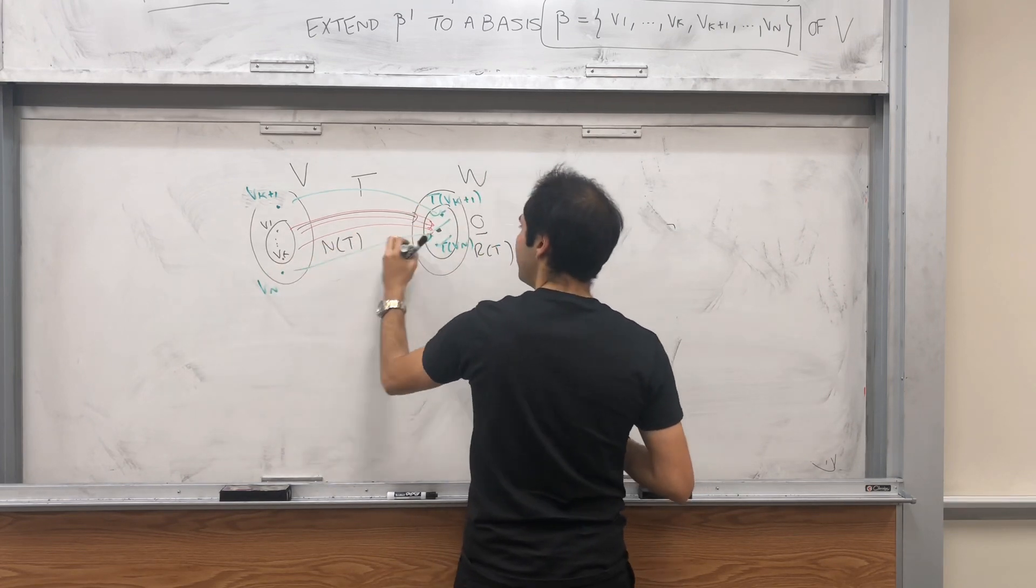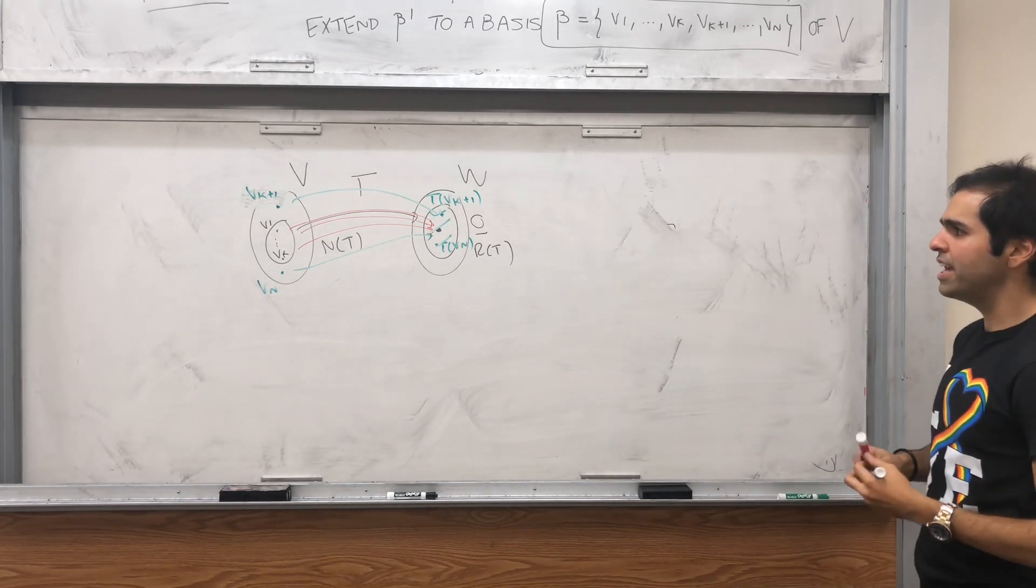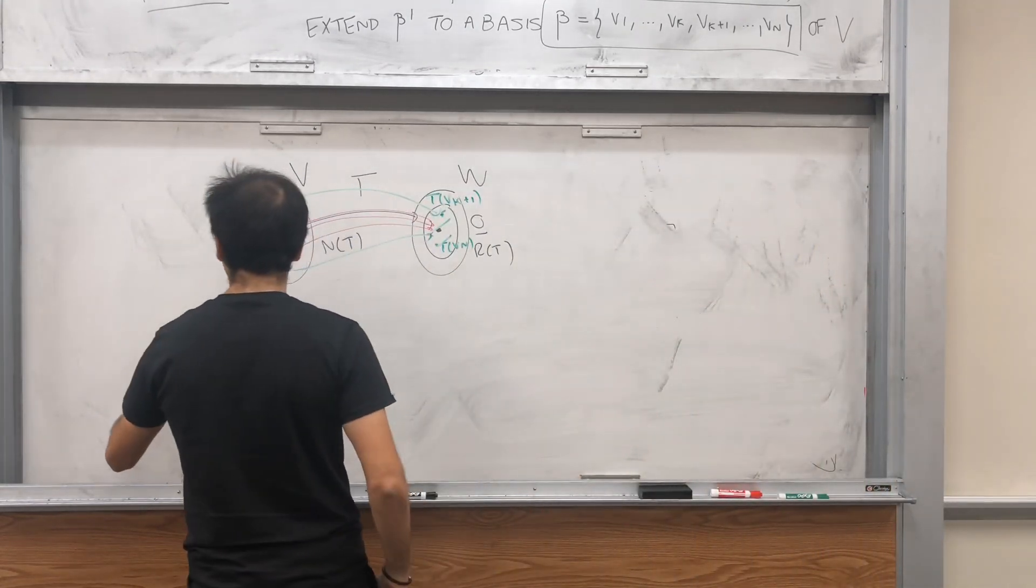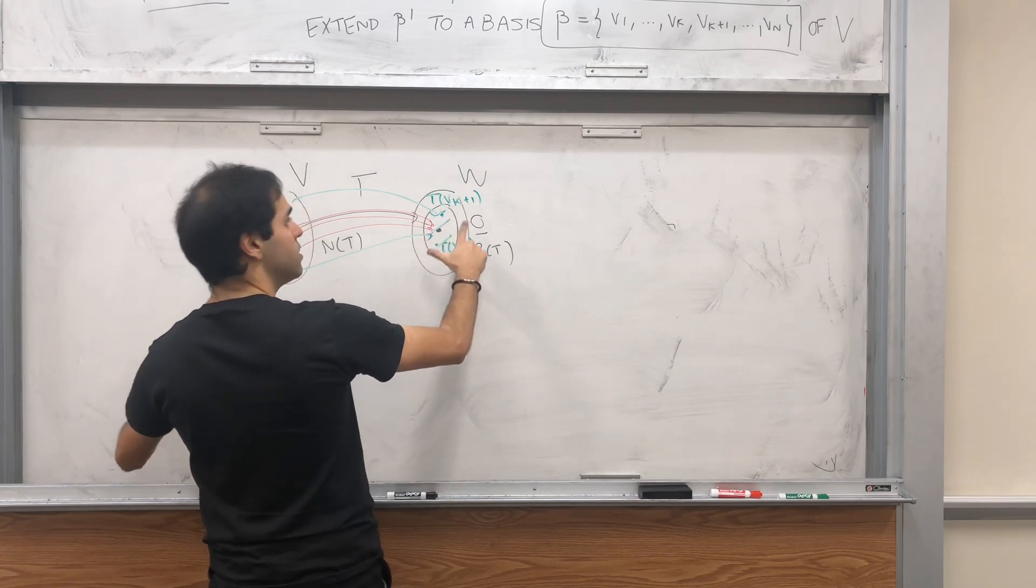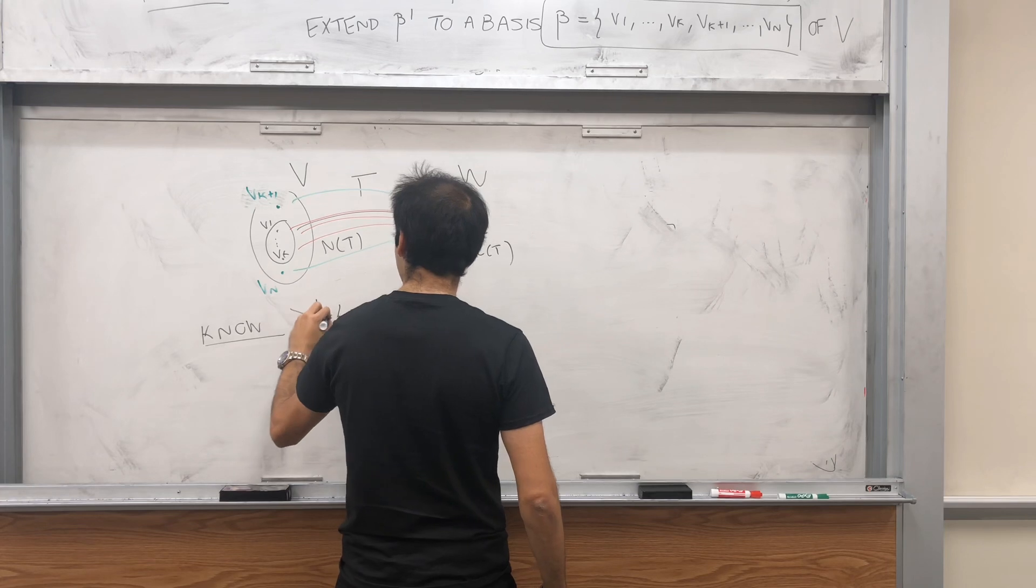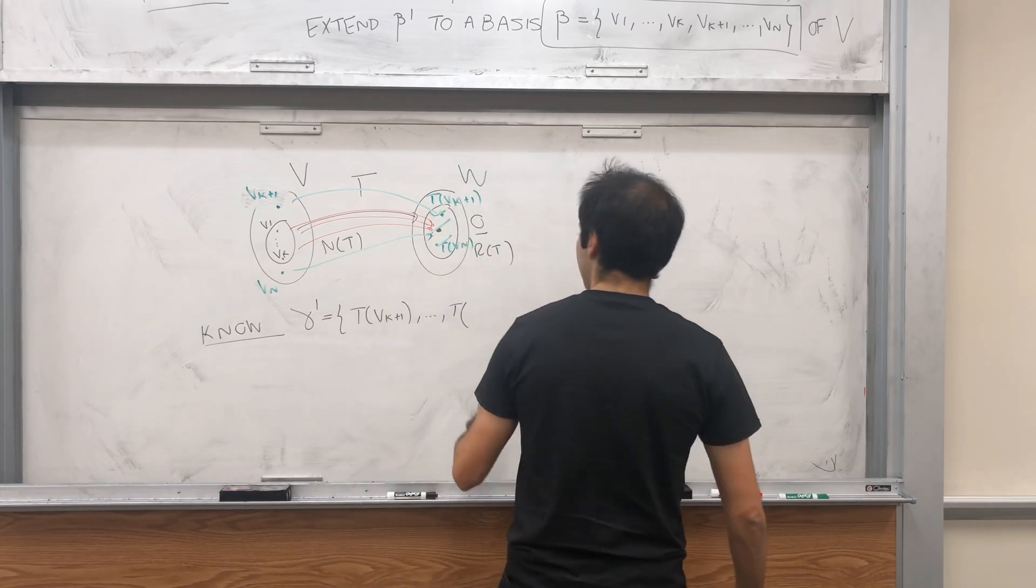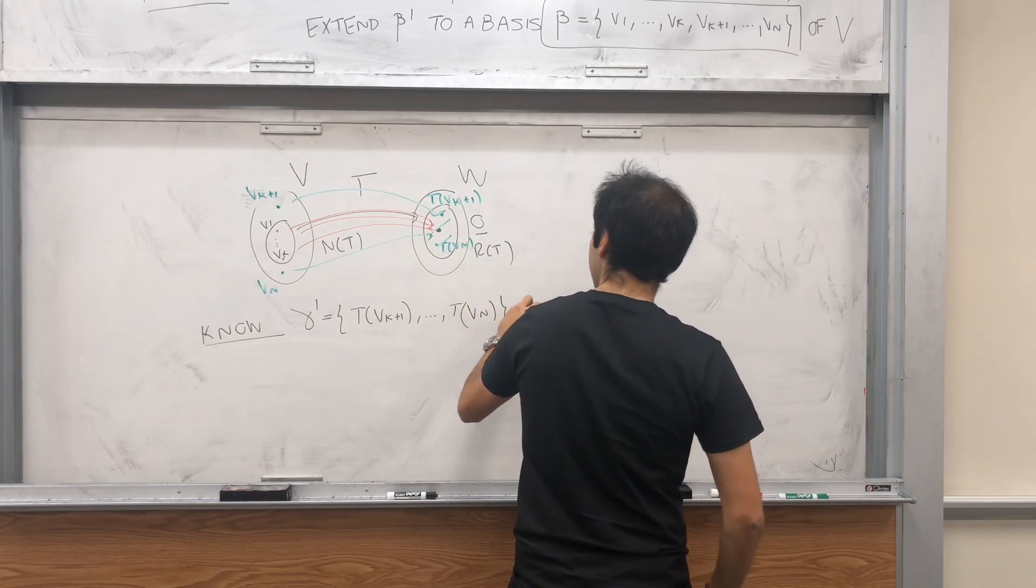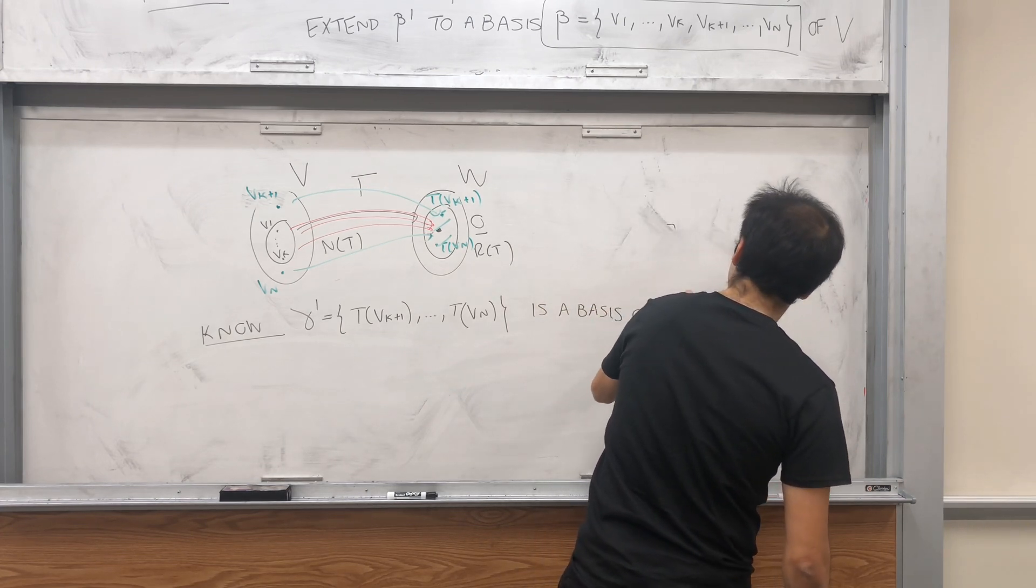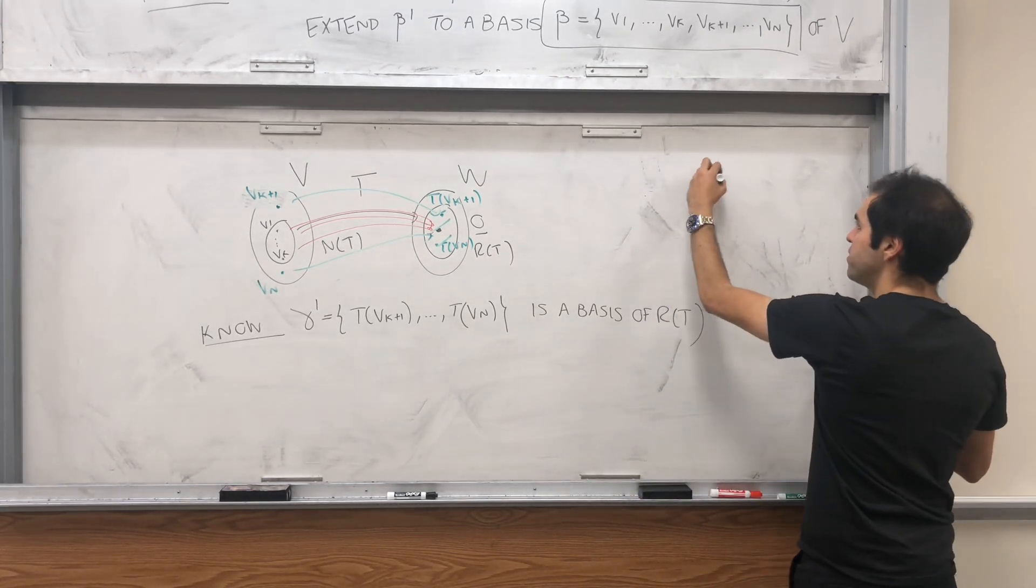And basically by definition of the range, tvk plus 1 up to tvn are in the range. So again, all the red vectors get sent to the zero. All the green ones get sent to the range. So I have shown in that video about the proof of the rank nullity theorem that all the other vectors, they form a basis for the range of T. So know that, let's call this gamma prime.